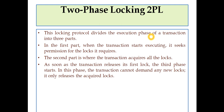The next one is very important — two-phase locking, or 2PL. This locking protocol divides the execution phase of a transaction into three parts. First part: when the transaction starts executing, it seeks permission for all the locks it requires. Second part: the transaction acquires all the locks. And as soon as the transaction releases its first lock, the third phase starts, in which the transaction cannot demand any new locks and only releases the acquired locks.